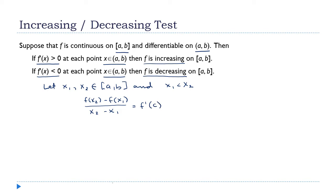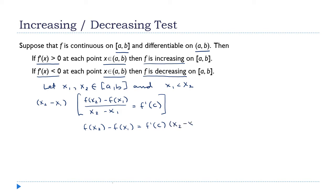Now let's get rid of the denominator — multiply through by x2 minus x1. The left side becomes f(x2) minus f(x1), and this equals f'(c) times (x2 minus x1).